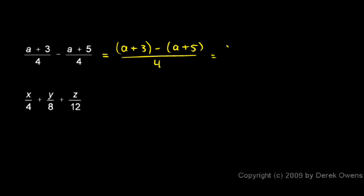So I can think of this as (a+3-a-5) all over 4. Now the a and the minus a cancel out, and I'm left with 3 minus 5, which is negative 2 over 4.